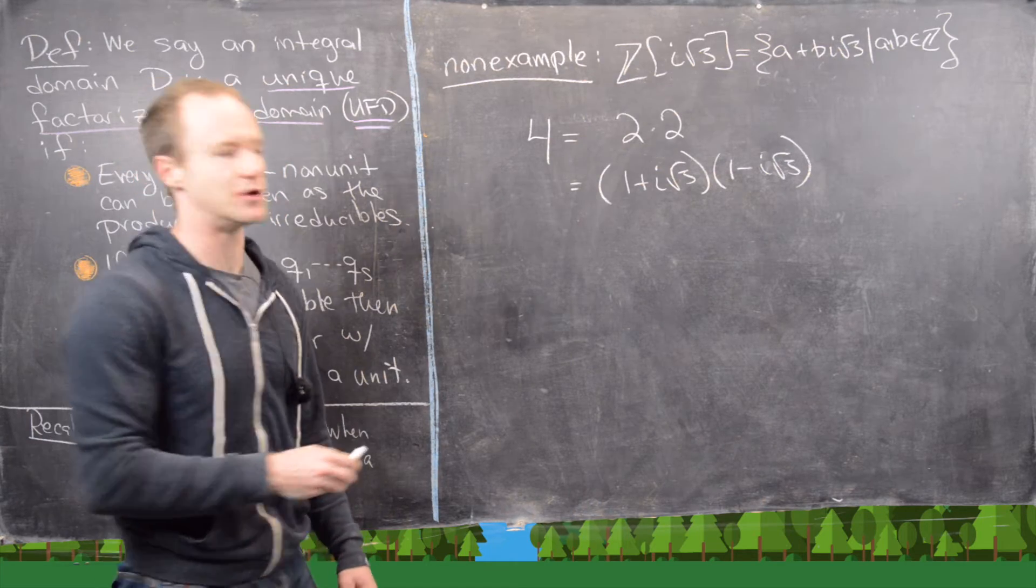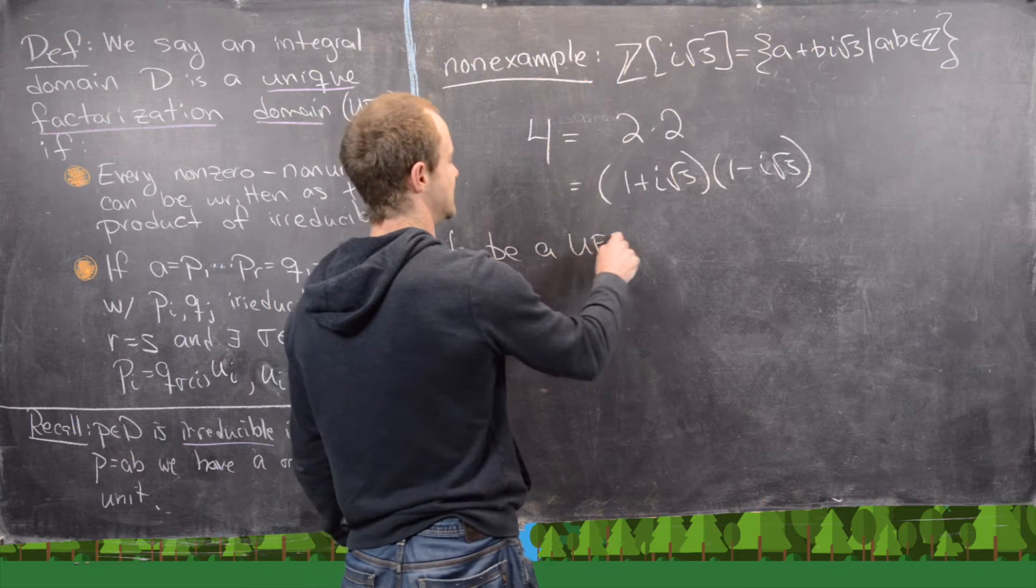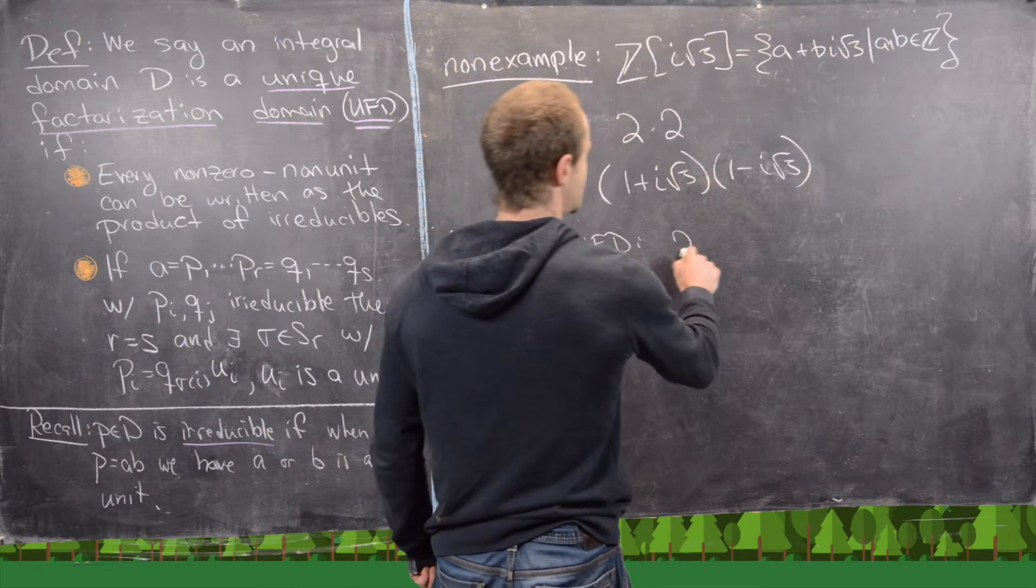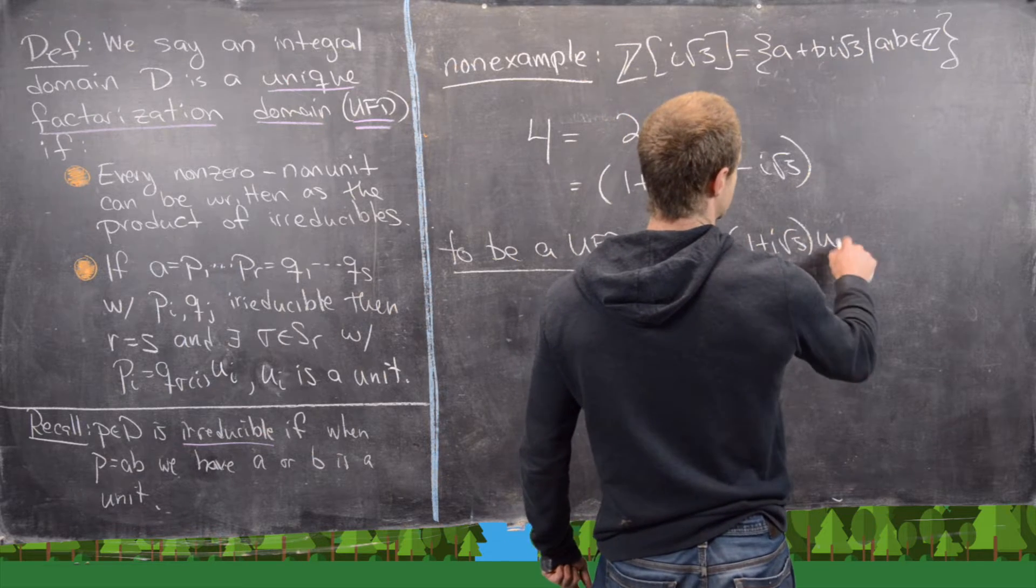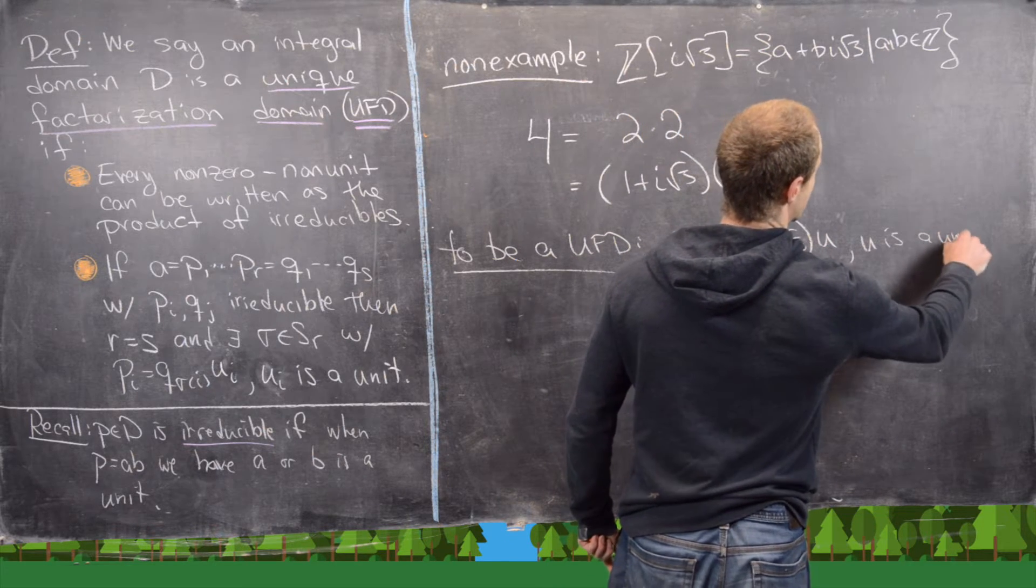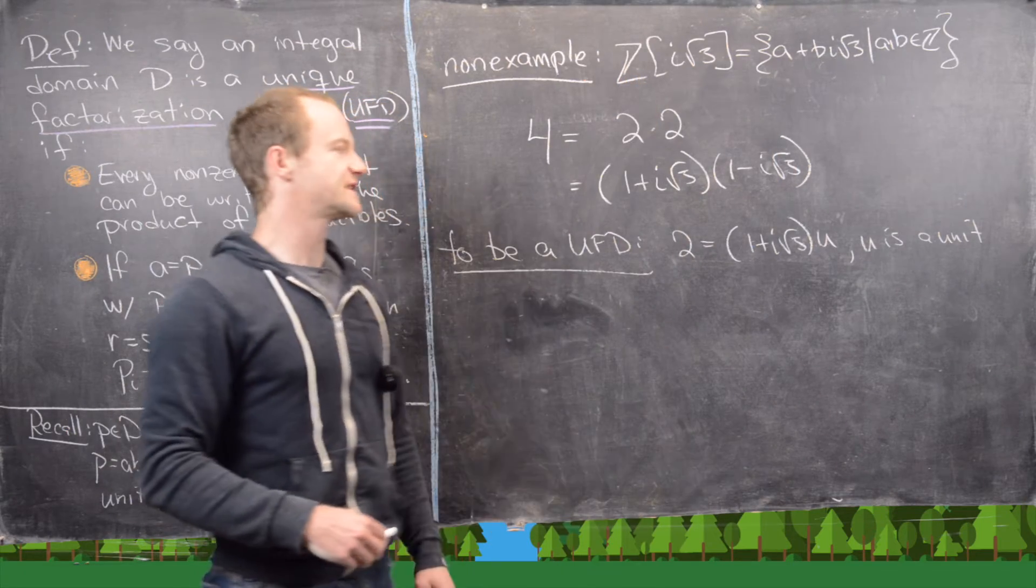Okay, so let's see what it would take to be a UFD and see what goes wrong. So to be a UFD, we would need 2 equals 1 plus I root 3 times U, where U is a unit.